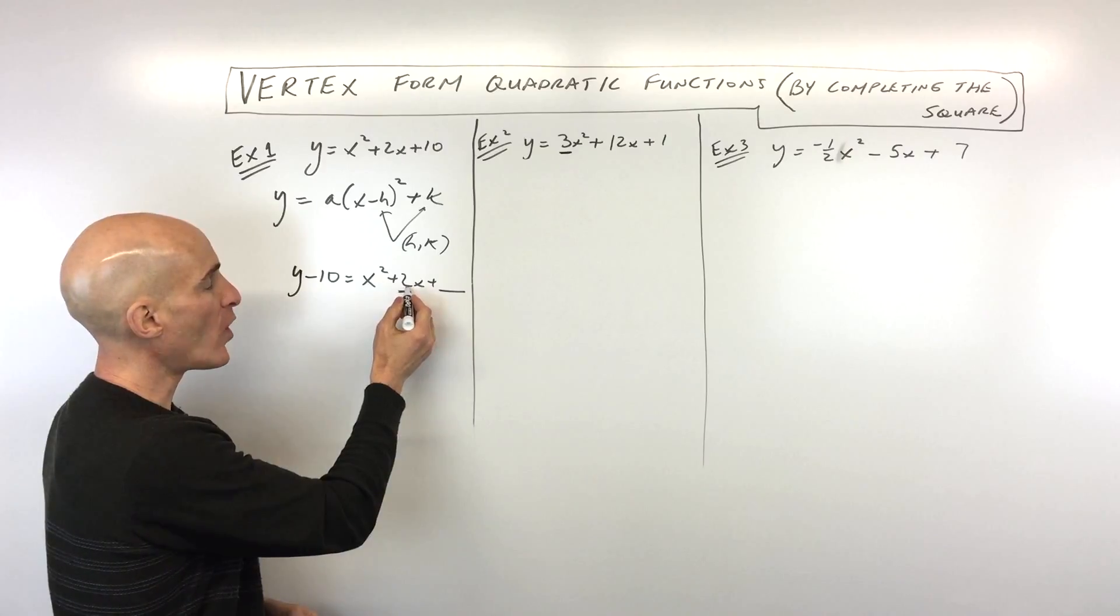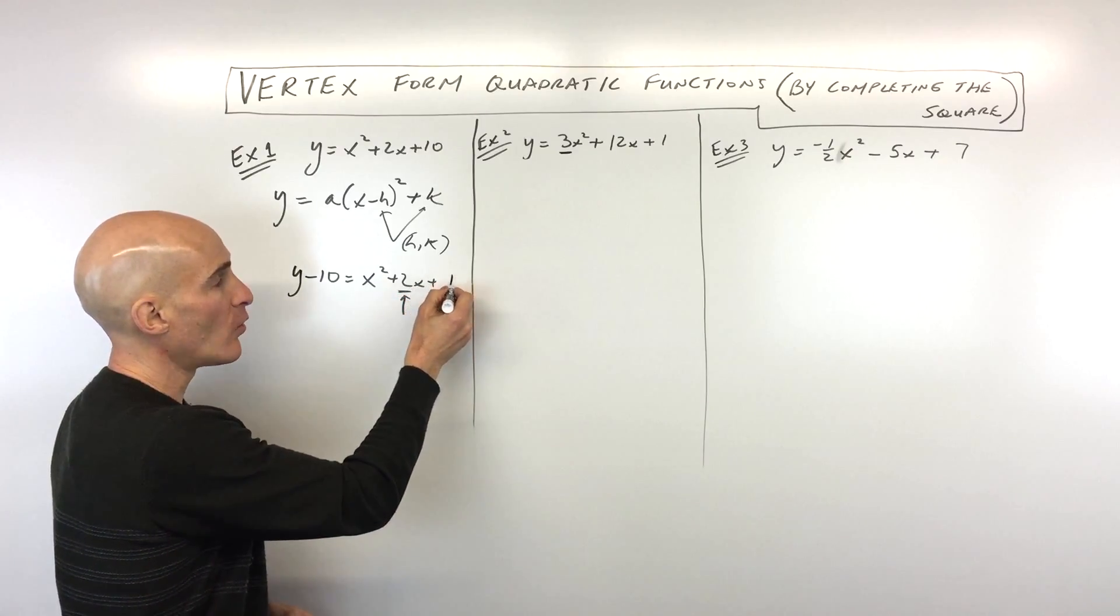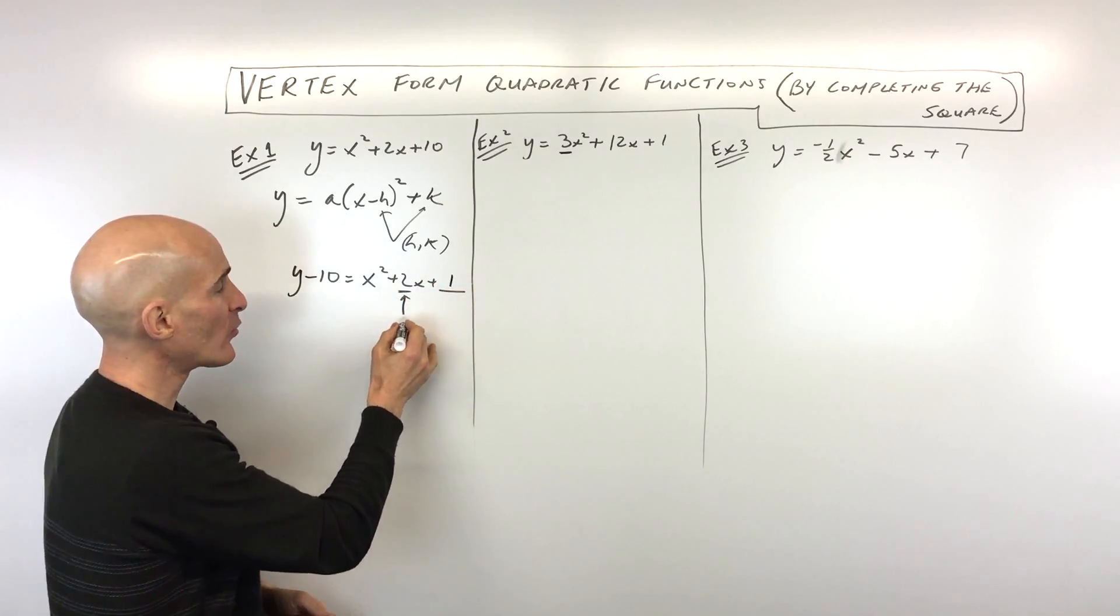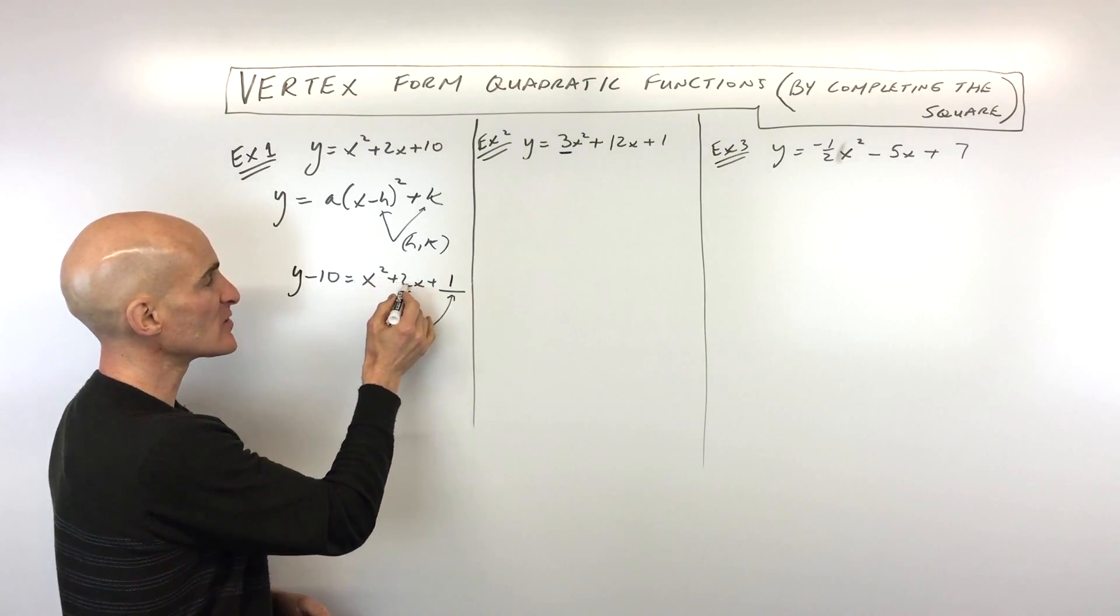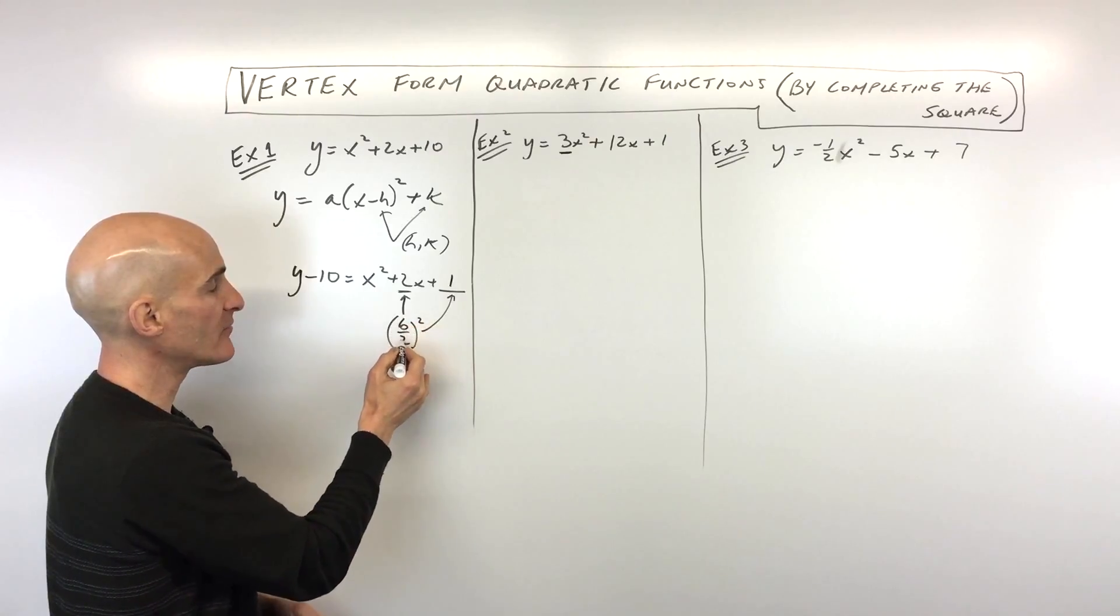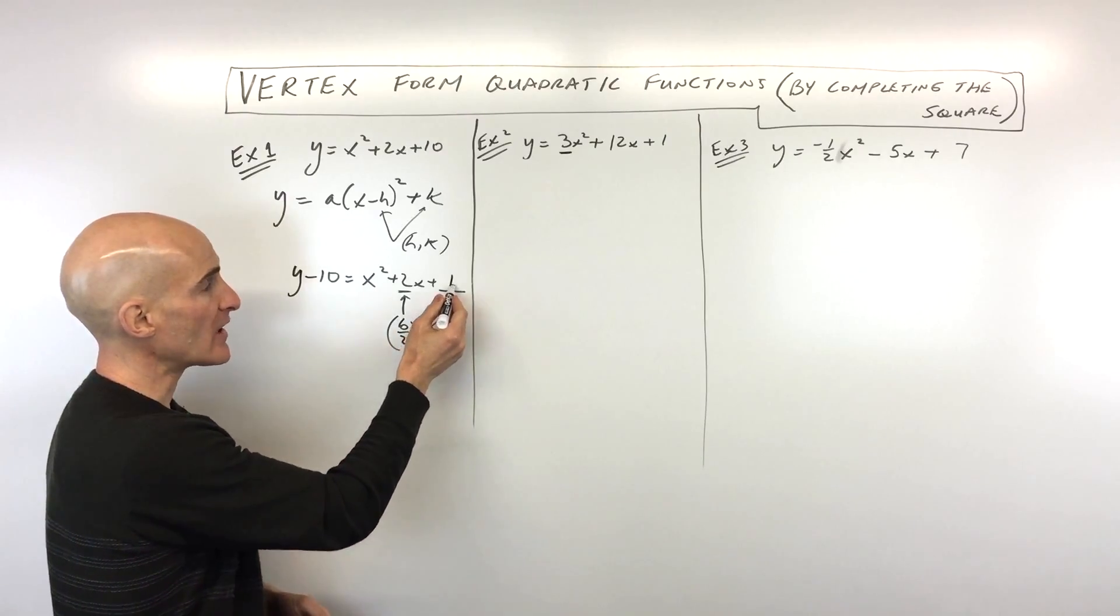So half of 2 is 1. 1 squared is 1. Some people write this as b over 2, the quantity squared, because this is like ax squared plus bx plus c. So you're taking half of b, and then squaring it.